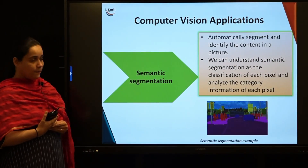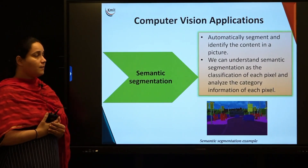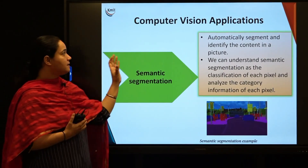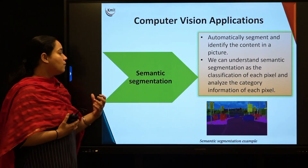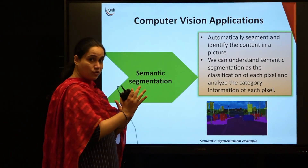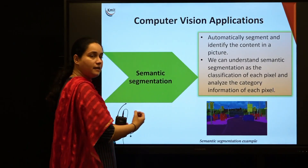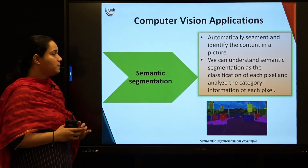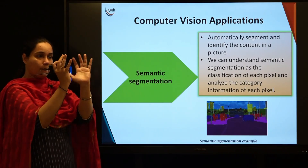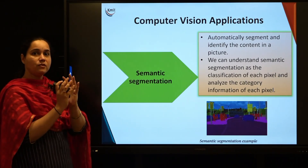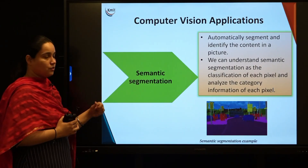Under computer vision, the next application is semantic segmentation. Here we automatically segment and identify the content of a picture. Semantic segmentation can be understood as the classification of each and every pixel — we analyze the category information of each pixel and understand separate pixel groups of the image to make sense out of it.